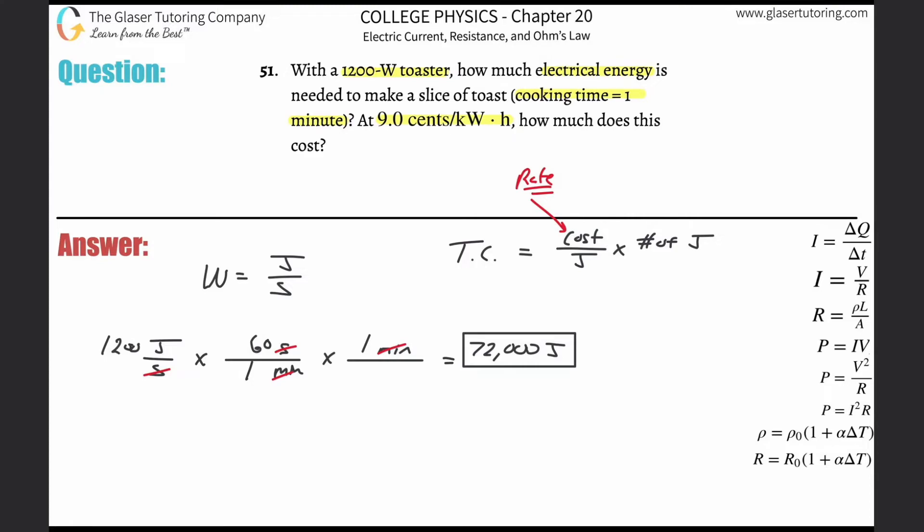I hate working with kilowatt hours, they're just confusing to me. So what I like to do is remember this and memorize that one kilowatt hour is the equivalent to 3.6 times 10 to the 6 joules. Keep that in mind. So what I now need to do is find the cost per joule. We already know the total number of joules: cooking the toast takes 72,000 joules.